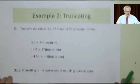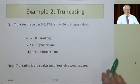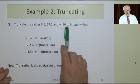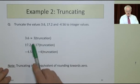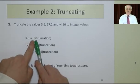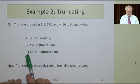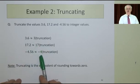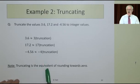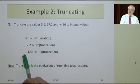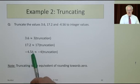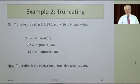Truncating values is when you cut out the last bit. So 3.6, 17.2, and -4.56, we can truncate those numbers. 3.6 will be just 3, 17.2 would be 17, and -4.56 will be -4. Truncating is the equivalent of rounding towards 0, so you're all the time coming back towards 0. Even though you're beyond halfway to -5 there, you still call it -4.